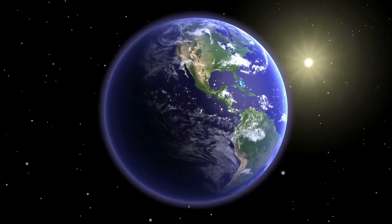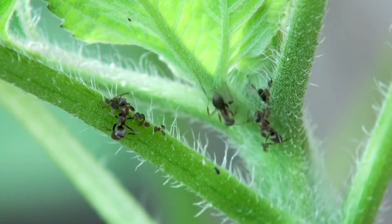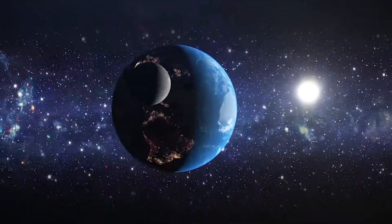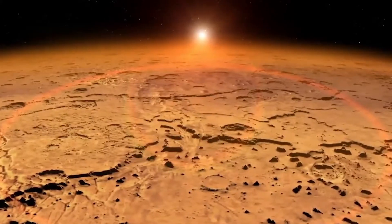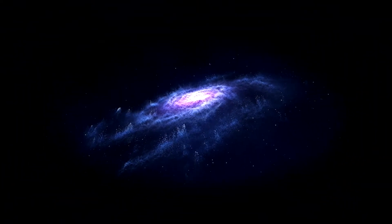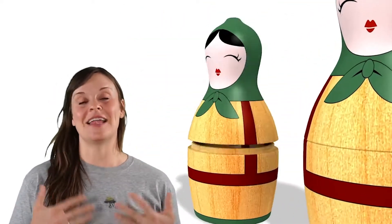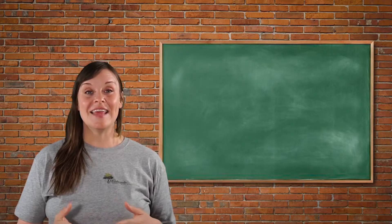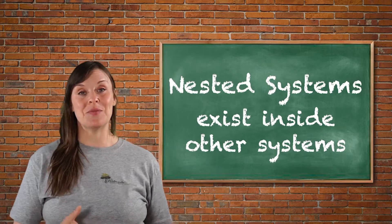Like our planet — it's got lots of systems like atmosphere, hydrosphere, and biosphere. But Earth is also part of the solar system that revolves around our sun, which is part of the galaxy, which is part of the universe. There are systems inside of systems inside of systems — you get the idea. These are called nested systems; they exist inside other systems.